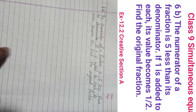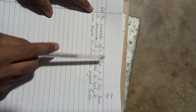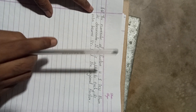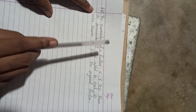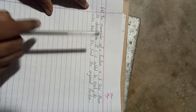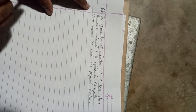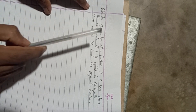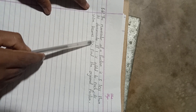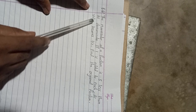Hi everybody, welcome back to Bimal Sarji's YouTube channel. This is question B of class 9 simultaneous equations, or linear equations, exercise 12.2, from the creative section. As per the demand of one of my subscribers, I have already solved section B, so this is now section A, and I am solving all these questions from end to start.